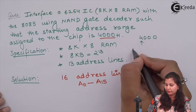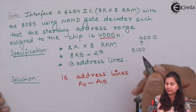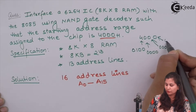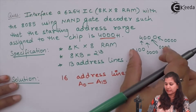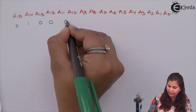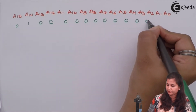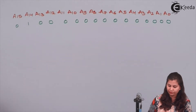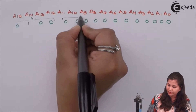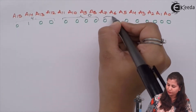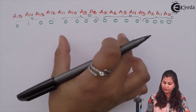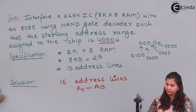For the digit 4 we use the 8421 notation, giving us 0100. For each 0 digit we have 0000. So the 16-bit binary representation of 4000H is 0100 0000 0000 0000 — that is, 0100 for the '4' and twelve zeros for the three '0' digits. So the starting address is 4000H.